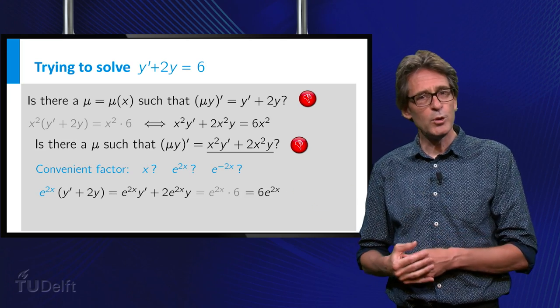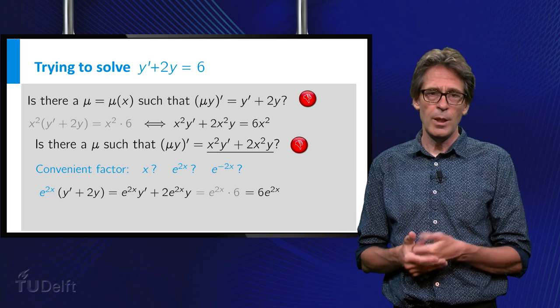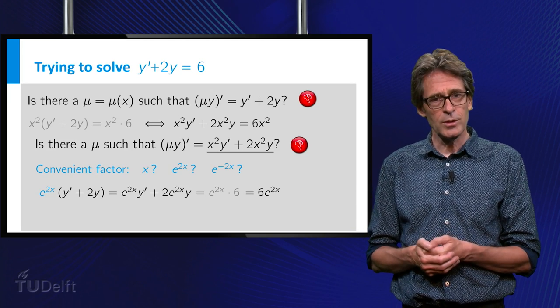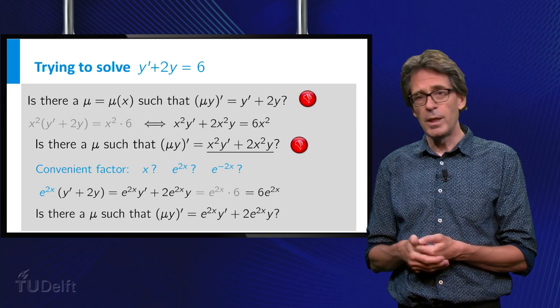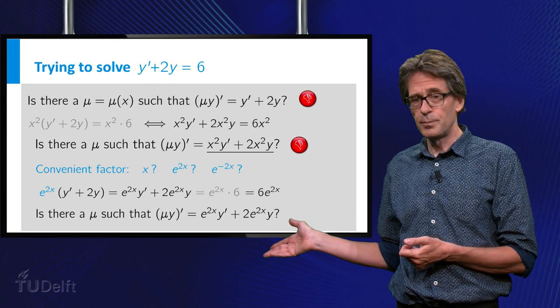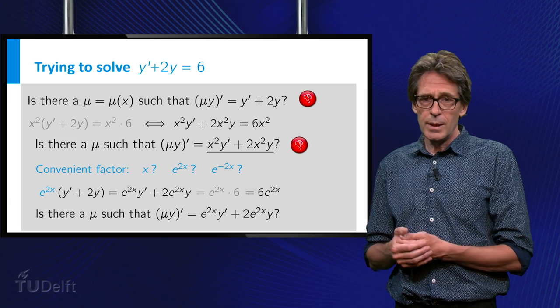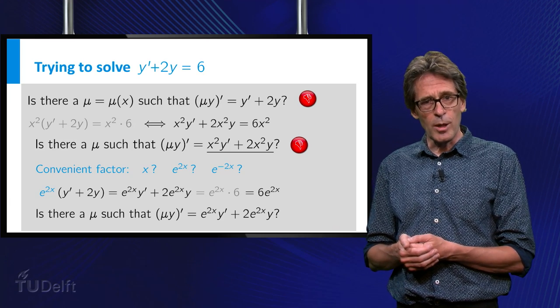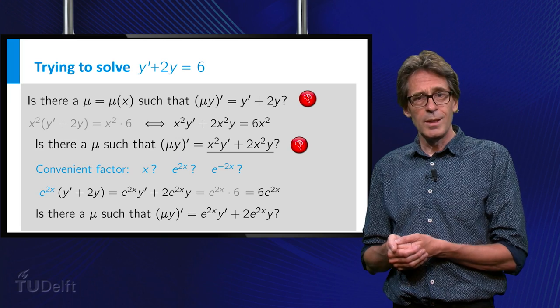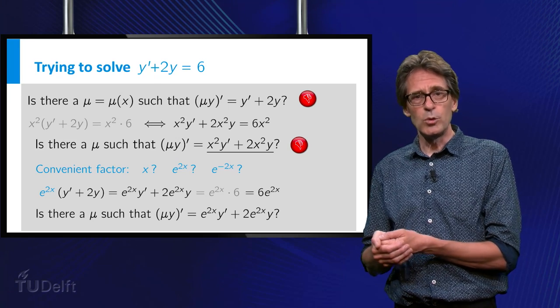Ok, let me show you that the second factor does the trick. Multiply by e to the 2x and the equation becomes, as you see on the slide, e to the 2x y prime plus 2 e to the 2x times y equals 6 e to the 2x.